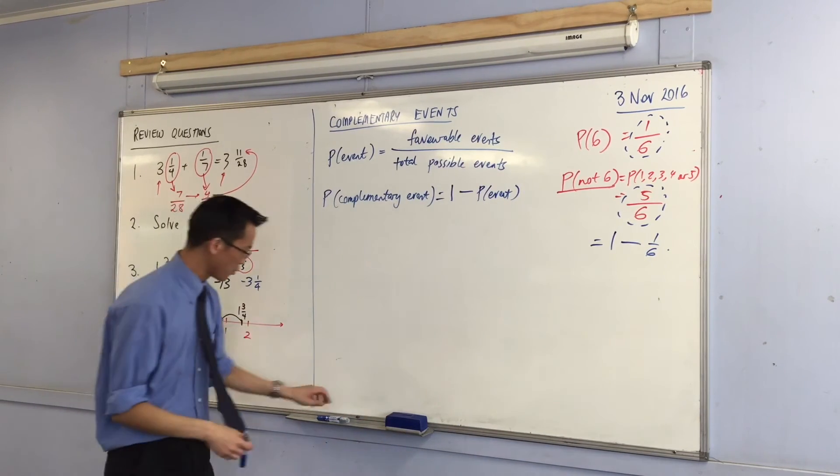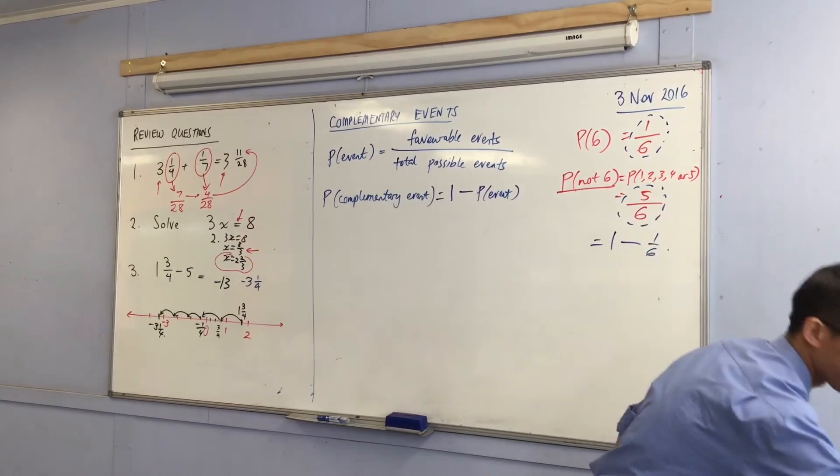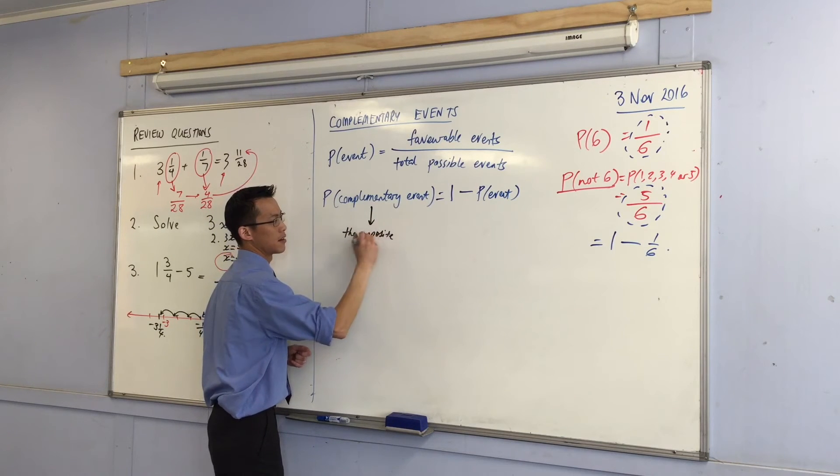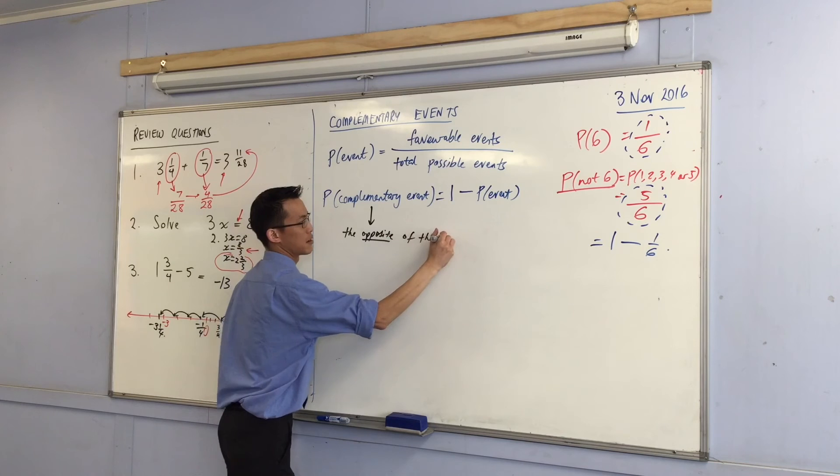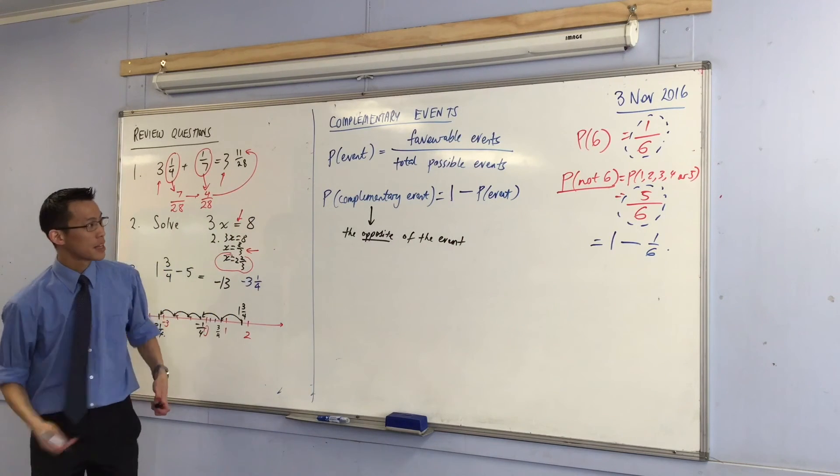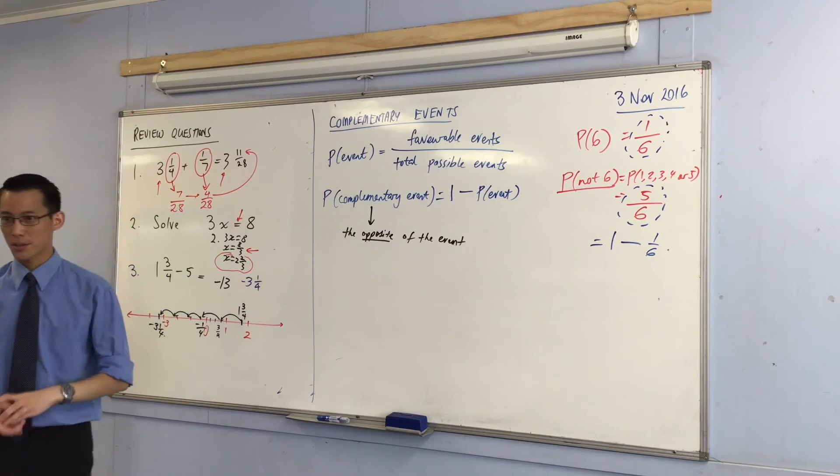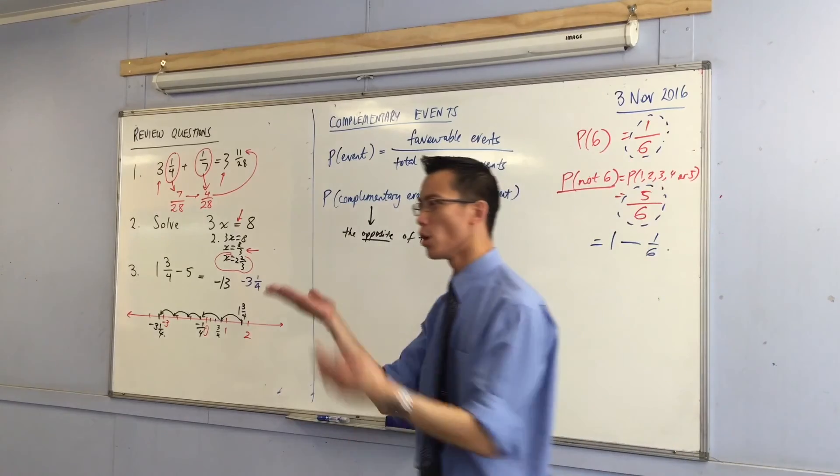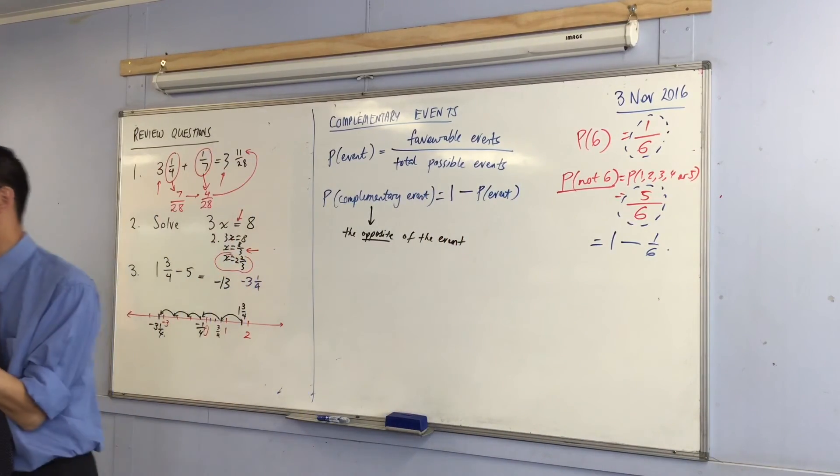So maybe you want to label the fact, with a better color, that a complementary event is the opposite of the event. So odd and even, that works. Six or not six, that works. Quick question, let's think about this. If you're playing a soccer game, win or lose, are they complementary events? Yes, no.